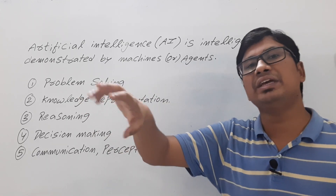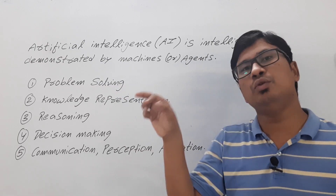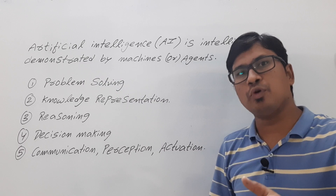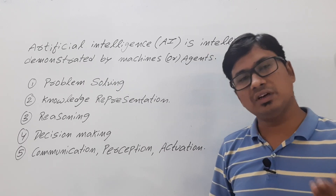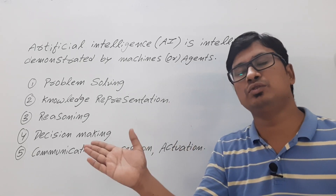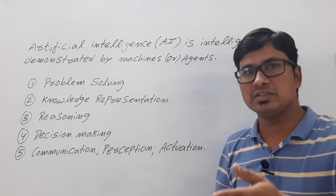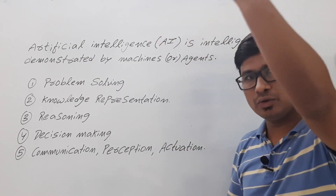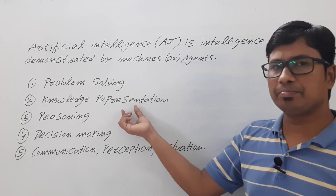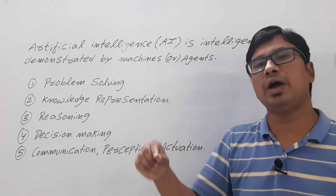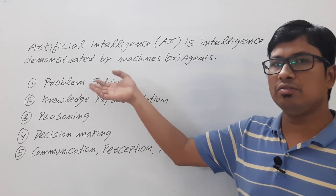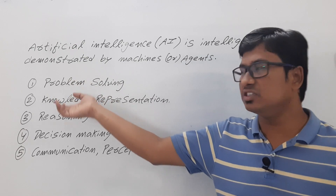For problem solving, consider a maze: you want to design an agent that starts from the starting point and reaches the end point. For knowledge representation, you represent whether the agent should go left or right, go up when there is a ladder, or fall down when there is a snake. For reasoning, if there is a snake, should the agent take that path or not? All these things are solved in artificial intelligence.